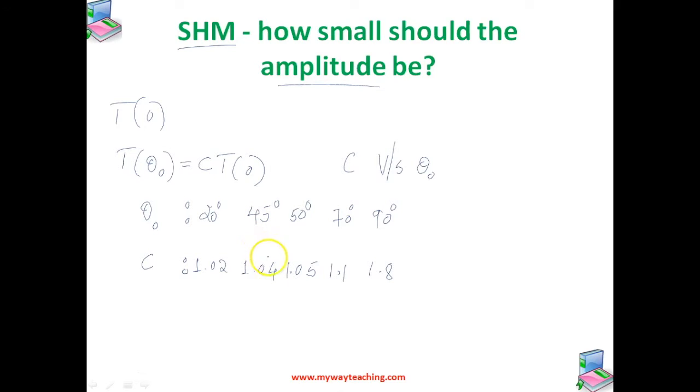This means that the error in the time period is about 2% at an amplitude of 20 degrees, and it is 5% for an amplitude of 50 degrees, and 10% at an amplitude of 70 degrees, and 18% at an amplitude of 90 degrees.